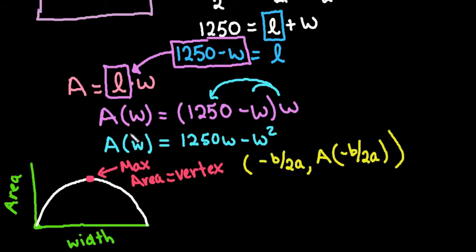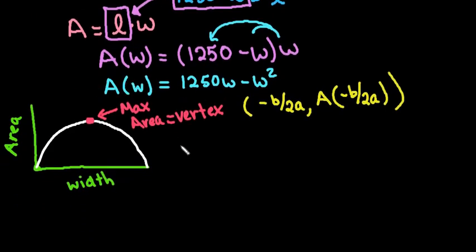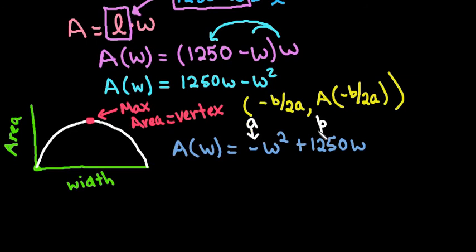Okay, so in order to do this, the negative B over 2A, what we want to do is write this in standard form. So we would take the area as a function of width is equal to negative W squared plus 1250W. Okay, the only reason I rewrote this is so that we can easily see that this is my A term and this is my B term.